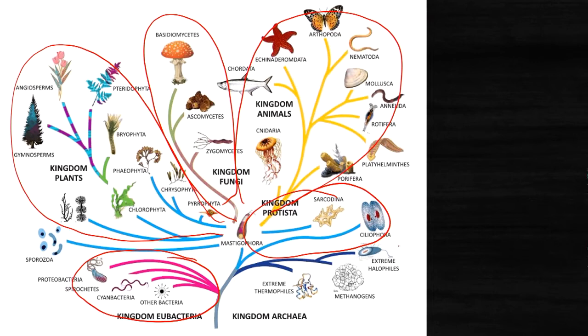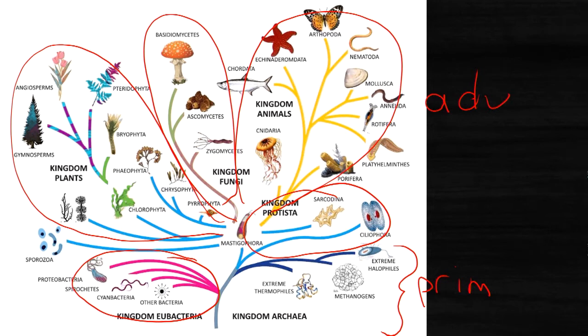It also tells you which living things are more simple or primitive — in other words, they don't have a very complicated structure, body, or way of life. Right at the bottom we have the simple, primitive organisms, and at the top we have the advanced organisms. It shows us which organisms are closely related. For example, mollusks and annelids are more closely related to each other than earthworms and nematodes, which are also a type of worm.